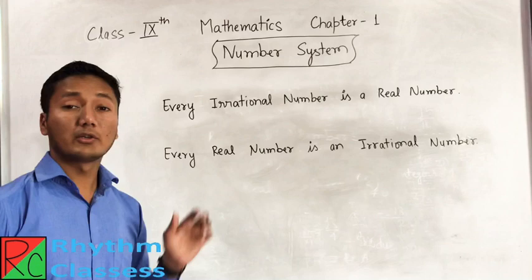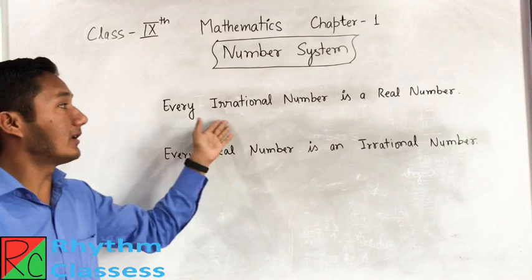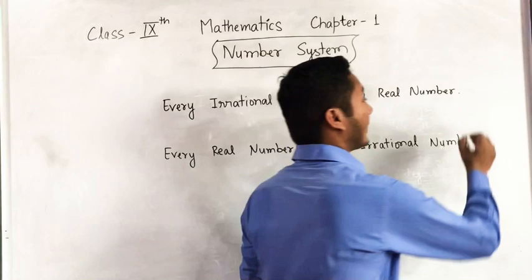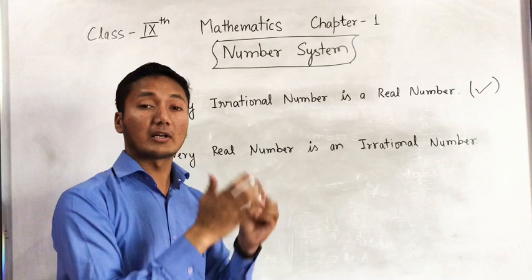Here I have two questions where you may be confused. The first question is: every irrational number is a real number. So, are all irrational numbers real numbers? This is correct. Why is it right? Because we have seen that real numbers are those that are rational and irrational.